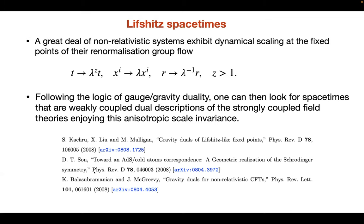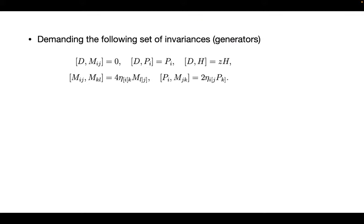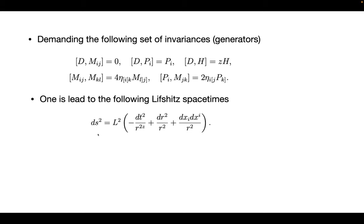These papers are quite close to each other with respect to that time. If you demand this set of generators — for example, D is the dilatations, M is the rotations, and P is the translations — note that there are no Galilean boosts here. You will be led to these Lifshitz spacetimes. For those of you who haven't seen this before, it is actually quite similar to AdS spacetimes, but the difference is z should be different than one.